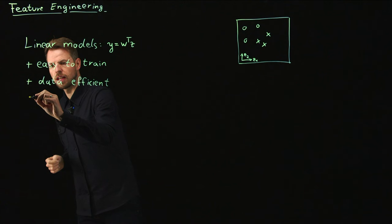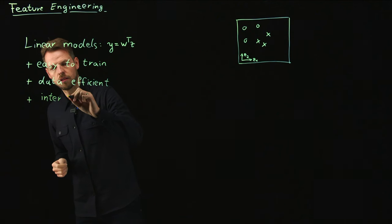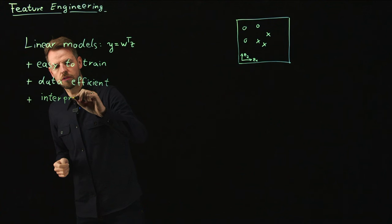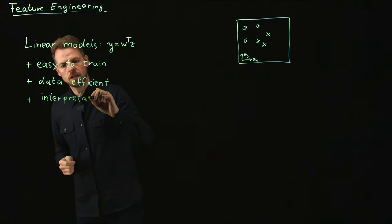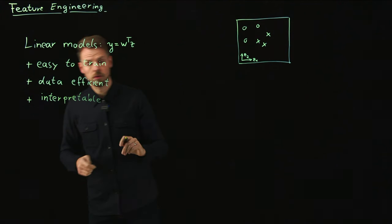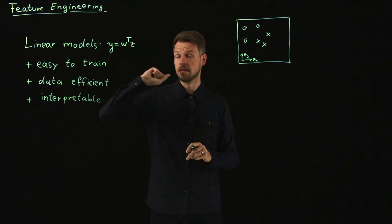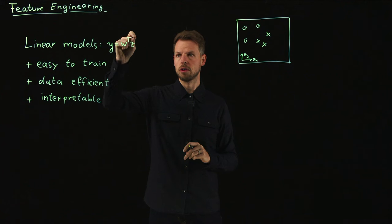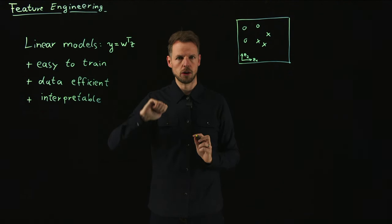A third thing that can be seen as very positive is that in many cases this model class allows for some sort of interpretability. It doesn't have to be always the case, but oftentimes if this is a classification problem, then the weights in your W vector will tell you how important particular inputs of z are in order to determine the output.